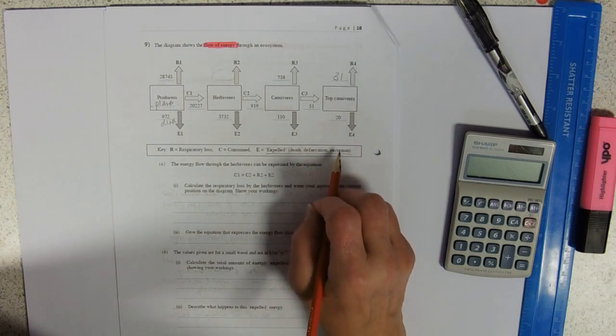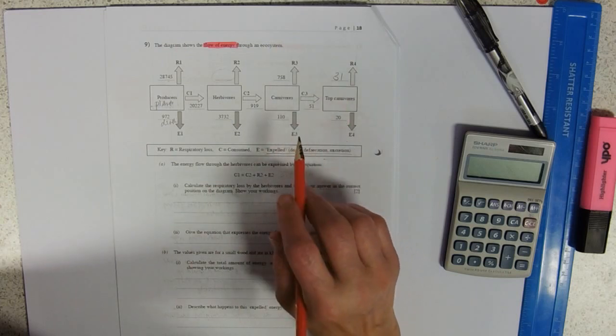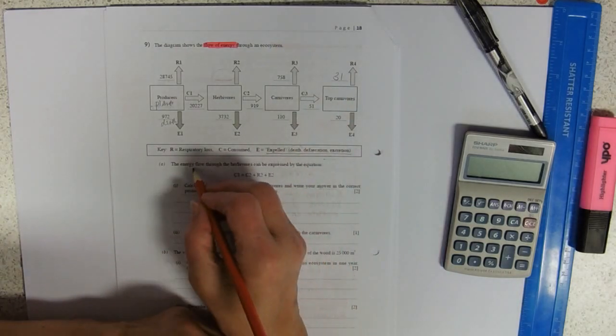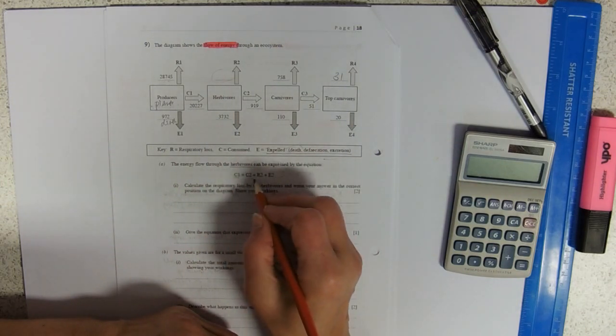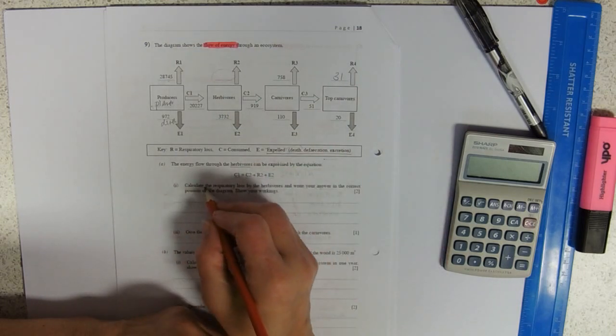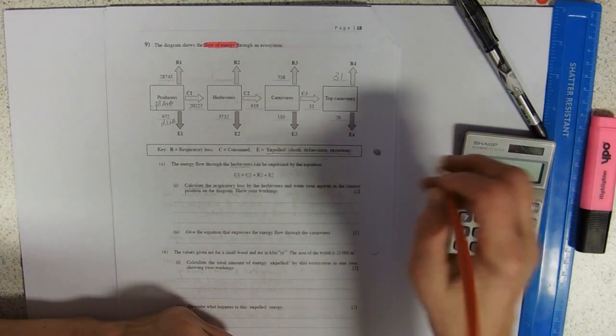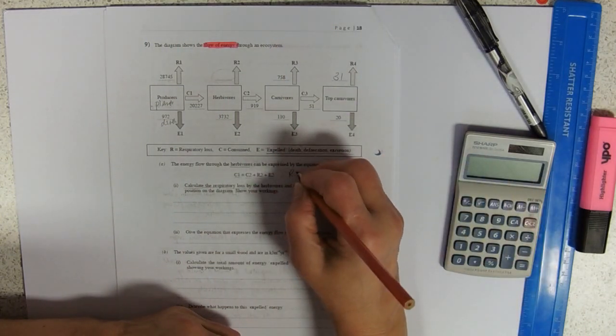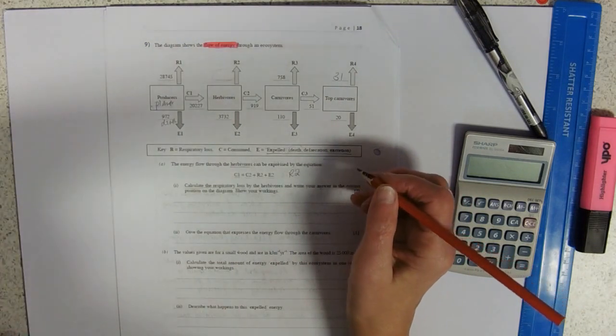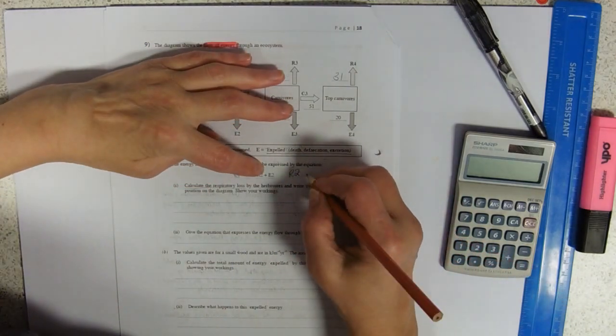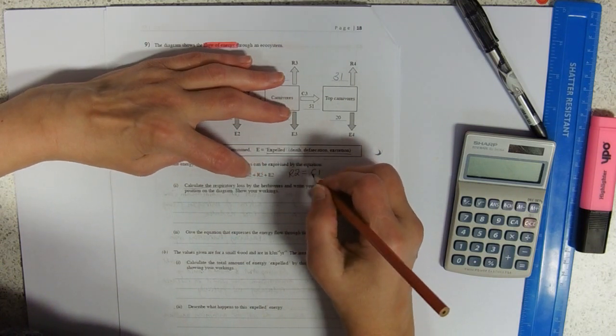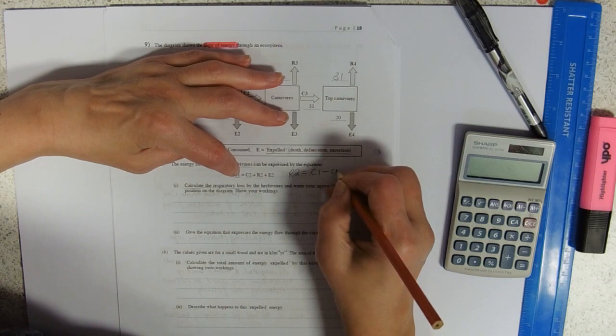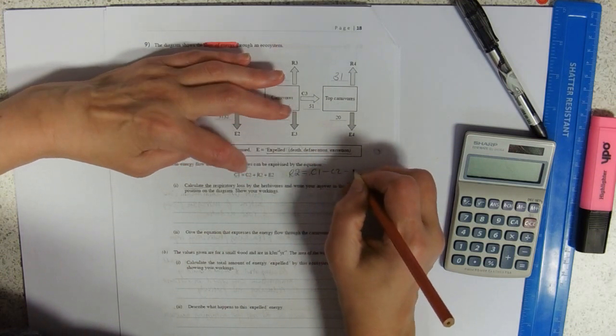The herbivores can be expressed by the equation C1 equals C2 plus R2 plus E2. Calculate the respiratory loss. We need to rearrange that equation so we can work out R2. So we'll leave R2 on that side equals C1—jump that over—minus C2 minus E2.